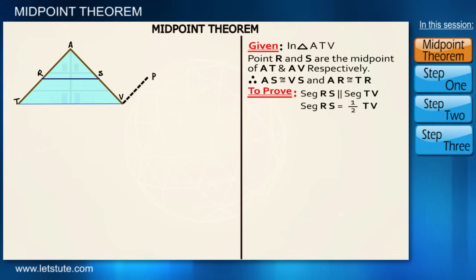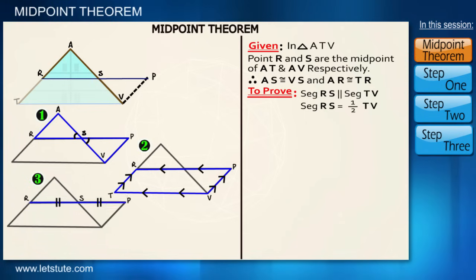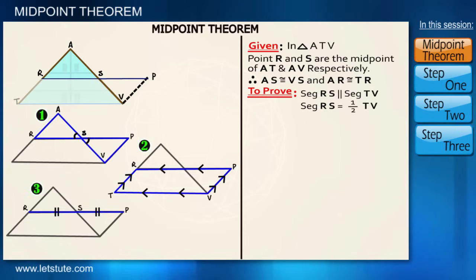Now we can prove everything in three simple steps. Step number one is we'll prove the two triangles are congruent. In the second step we'll prove that the quadrilateral RTVP is a parallelogram, and finally we'll prove that RS is equal to SP.